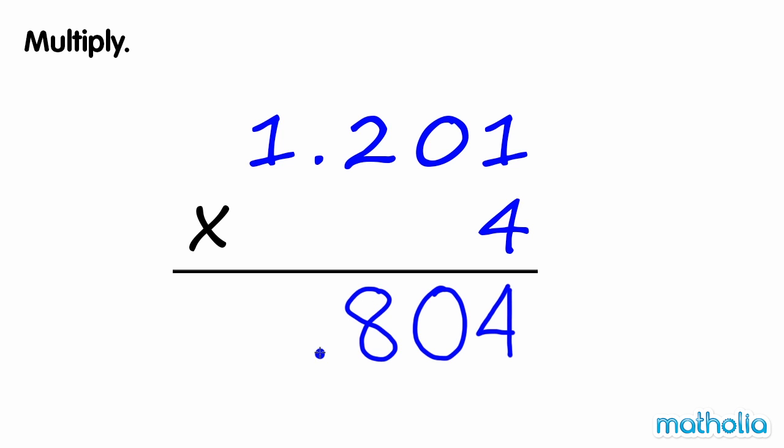Multiply the ones. 4 times 1 one equals 4 ones. 1.201 times 4 equals 4.804.